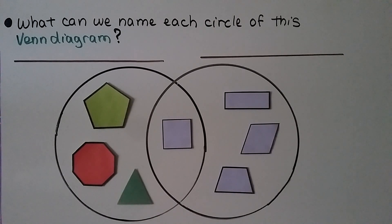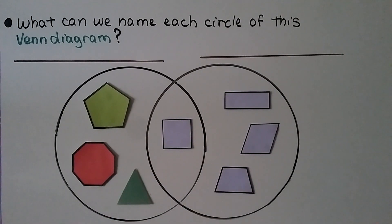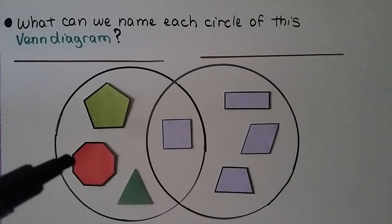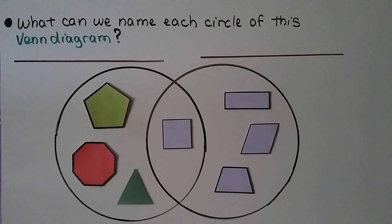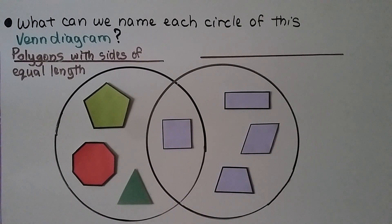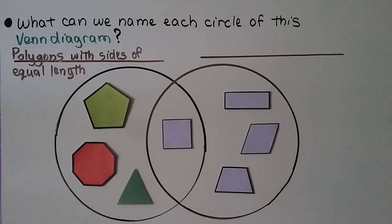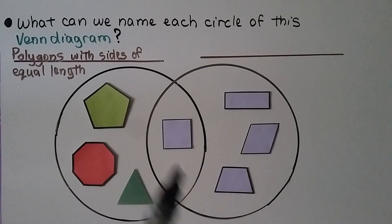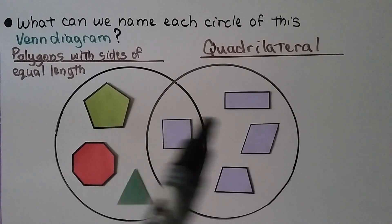What can we name each circle of this Venn Diagram? We need to write a label for each side. We have a pentagon, an octagon, and a triangle — if we look carefully, they all have equal side lengths. So we could name this circle polygons with sides of equal length. The other shapes all have four sides and four angles, so everything in that circle is a quadrilateral. And where they overlap, we have a square — that's a polygon with sides of equal length and it's a quadrilateral.